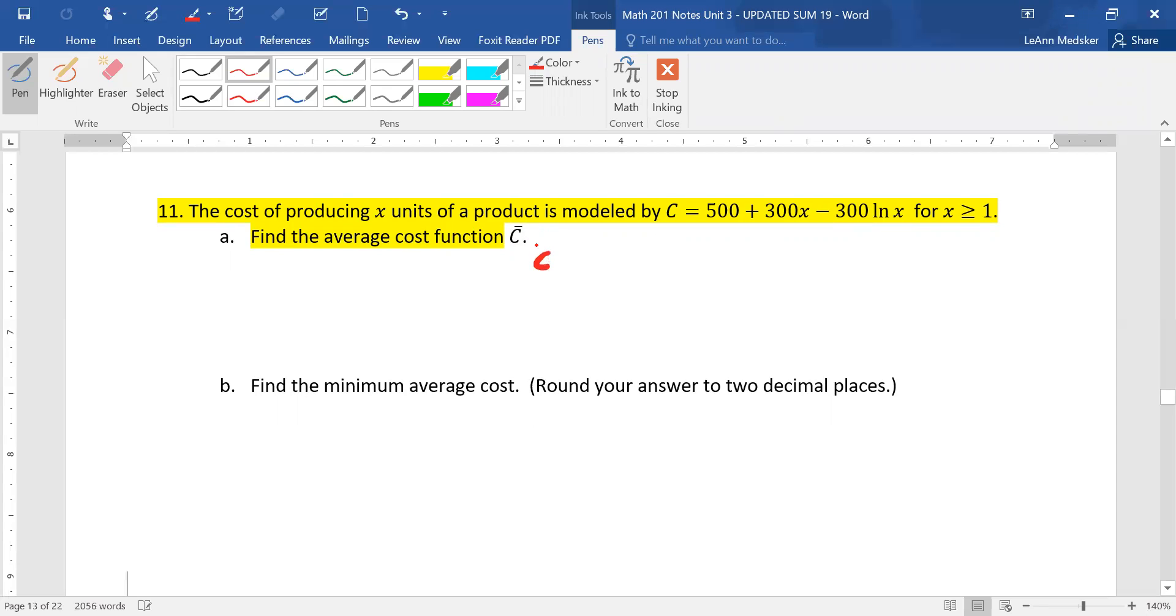Remember that C bar is just C divided by X, so we're going to take our function and divide each term by X, so that would be 500 over X plus 300 minus, I'm going to write this as 300 times natural log of X over X. The next part, and that's just the average cost function.